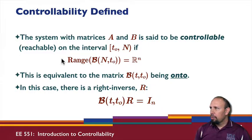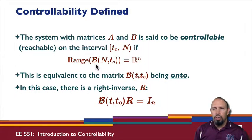So, the system with matrices A and B is said to be controllable, or reachable. Sometimes you'll see that used in the literature on the interval from t0 to N, if the range of that matrix is all of R^n. So, if it's all of R^n, then it's said to be controllable. Sometimes controllability has a slightly different implication, but this is the one that we're going to use. This is probably the most standard definition.